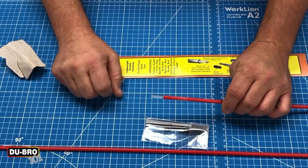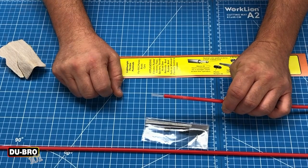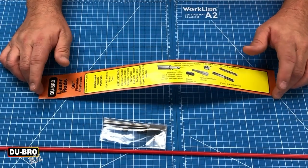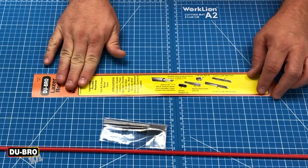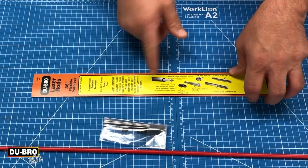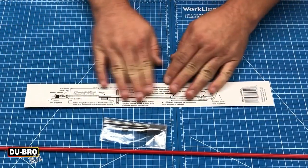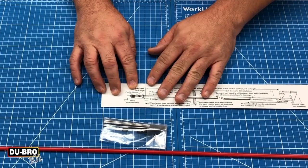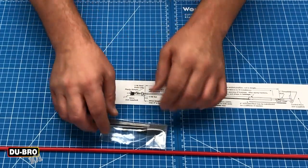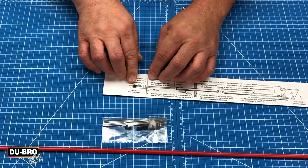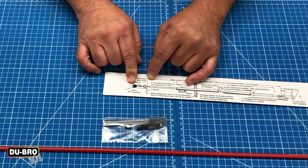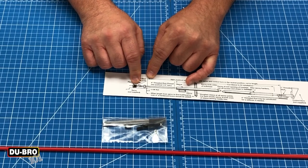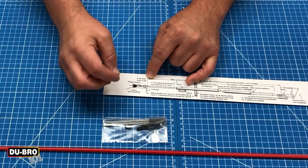Now use of the laser rods is really straightforward. You've got some included hardware, lots of different application suggestions, and a diagram on how to do your assembly. Just a couple things to point out: you do have these plastic keepers that slide over top of your clevises.